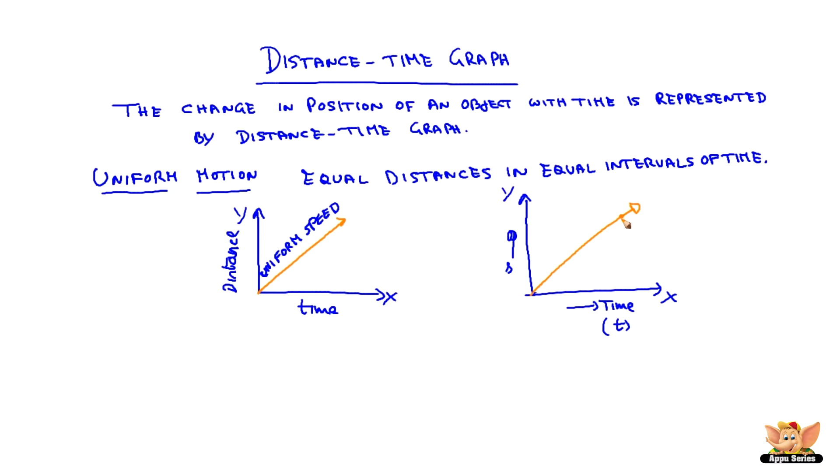So the object is at position A. It started from O. When we draw a perpendicular from A to the x-axis, which is time, it touches the axis at B. And when you draw a perpendicular to the y-axis, it touches at C.